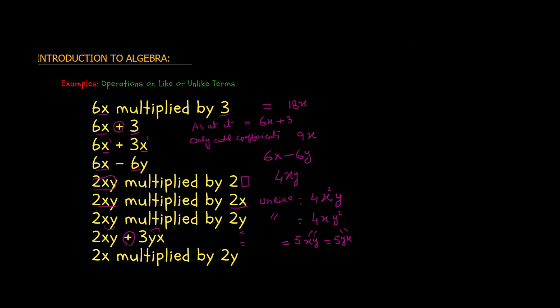The last example here: 2x multiplied by 2y. So 2 multiplied by 2 is 4, and x multiplied by y is xy — because their exponents cannot be added as they are two different bases. So they stay as xy, and the answer is 4xy.